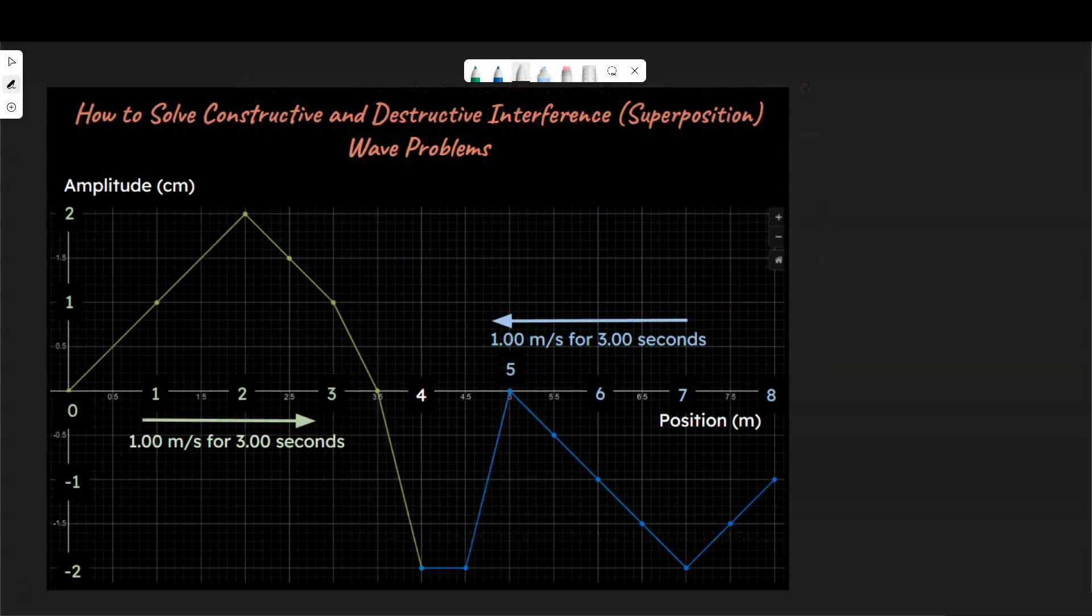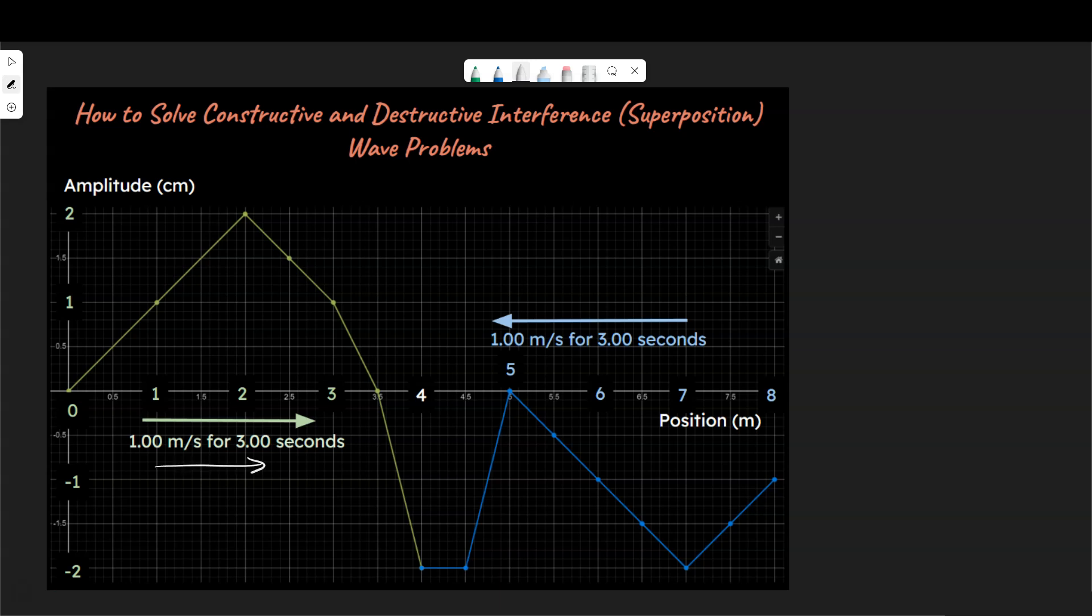Let's take a look at a problem and think about how to work through this. There's a green wave on the left and a blue wave on the right. The green wave is moving to the right at one meter a second for three seconds, and the blue wave is moving to the left at one meter a second for three seconds. Essentially both waves are going to shift over by three units, and we want to pick points that are logical so we can plot what's going on with the x and y coordinates.